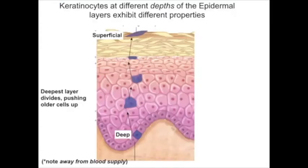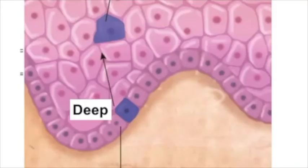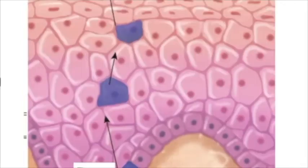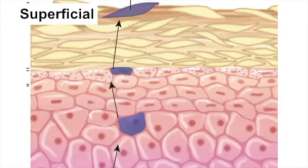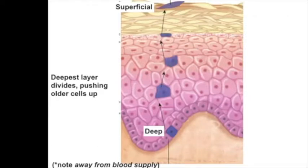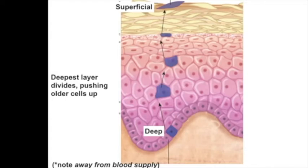The keratinocytes at all different levels of the epidermis are all coming from the deepest layer. These cells divide and as they do so, they're pushed up superficially and will change their properties along the way. Those deepest layer cells are continuously dividing, and the most superficial cells are all dead. Epithelium is avascular, so the deeper level cells are close to the blood supply of the underlying areolar tissue, whereas the more superficial cells have moved away from the blood supply — one reason why they begin to die.